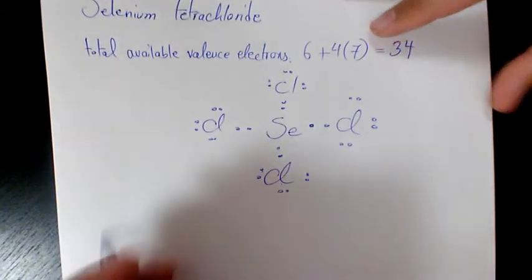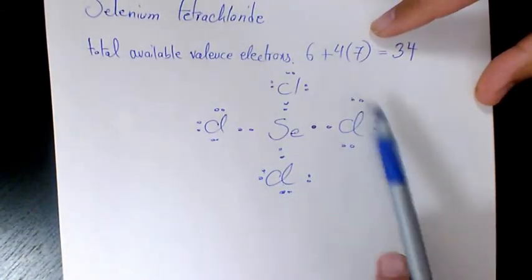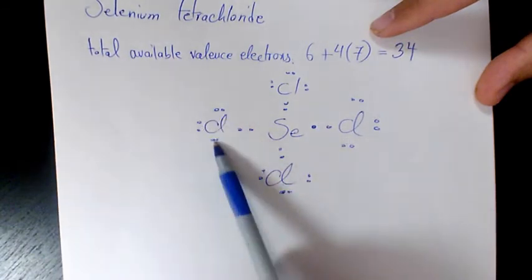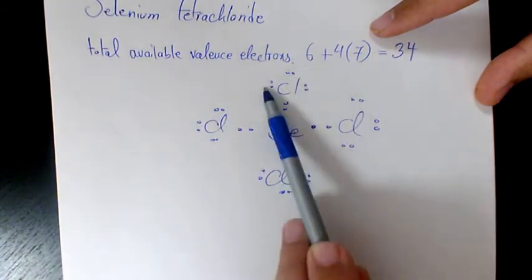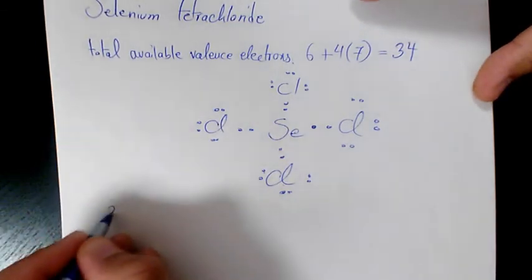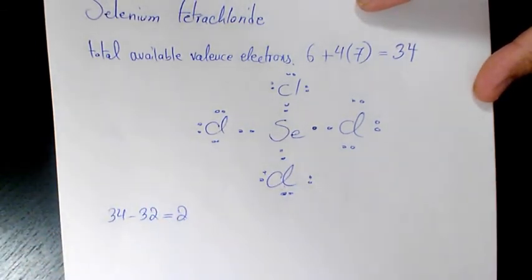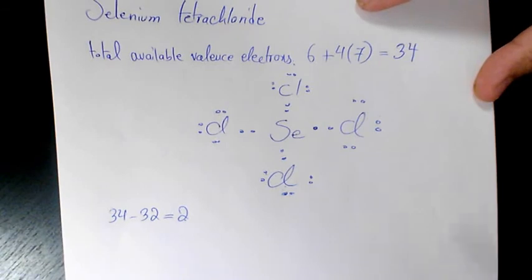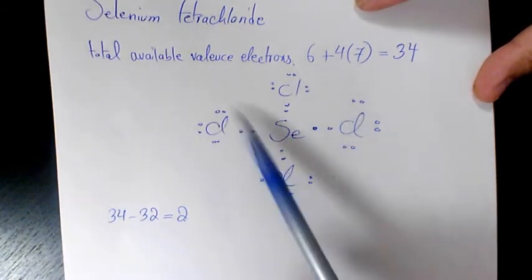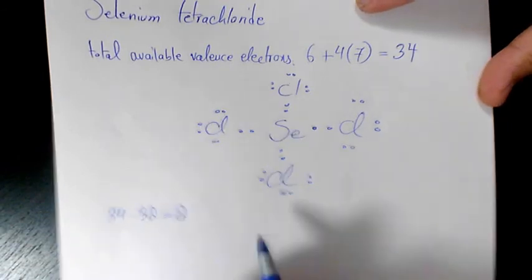Then I need to count how many available electrons we still have. We have 4 electrons on each Chlorine bond region, so 16 times 2 is 32. So 34 minus 32, we still have 2 available electrons. As you see here, Chlorine follows the octet rule, so we need to place these 2 electrons on the Selenium.